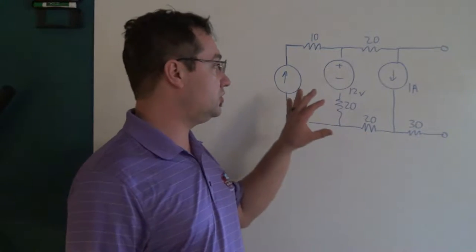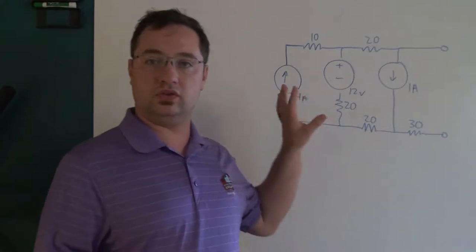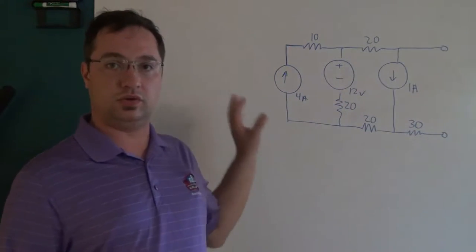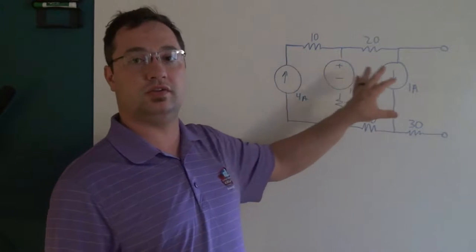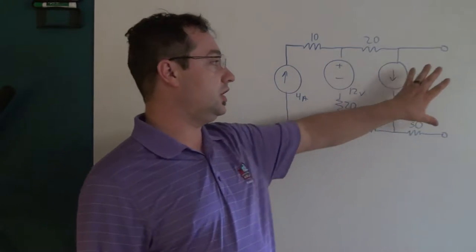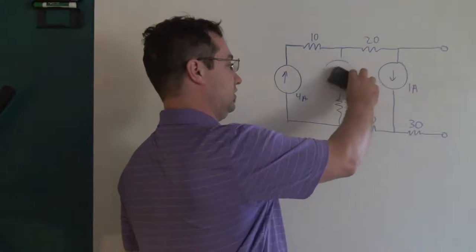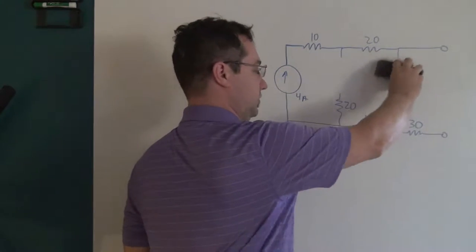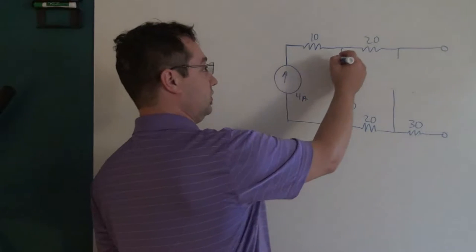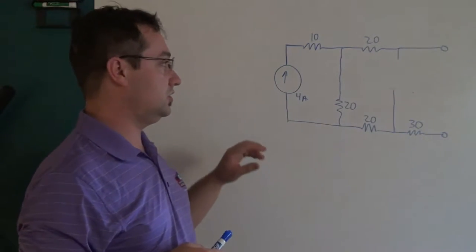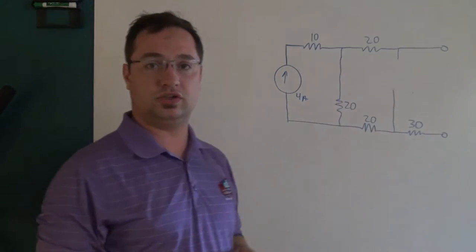The superposition theorem says that you can shut off all but one source in the circuit, do your analysis, then turn on another source, shut off the others, do the analysis, and do that one at a time with every single source. When you're done, you take your results from each one and add them up. In this case, let's start with the 4-amp current source. If we shut off the 12-volt source and the 1-amp source — and draw in the jumper for the 12-volt source — we can do the analysis for what is the open circuit voltage at the output.